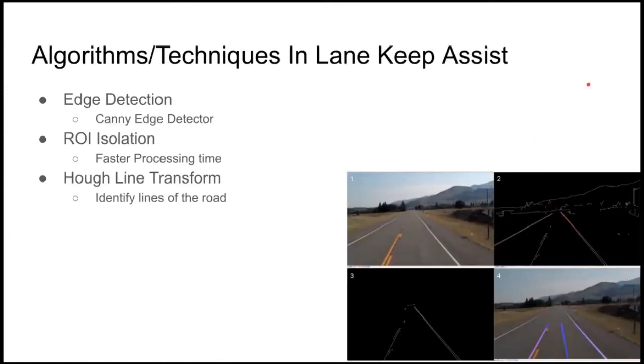These are three algorithms that we have used for lane keep assist. One was edge detection, specifically the Canny edge detector. We looked at other edge detecting algorithms as well, such as the Sobel edge detector operator. However, we have found that the Canny edge detector seems to work a bit better than the Sobel edge detecting algorithm.